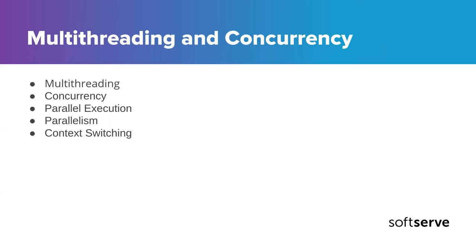Let's start with the basic terms that define multi-threading and concurrency in the modern computing world. Multi-threading is a special technique that allows simultaneous execution of two or more parts of the program. It is intended to maximize the utilization of a CPU.